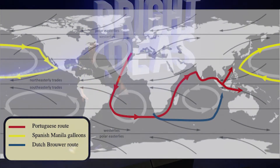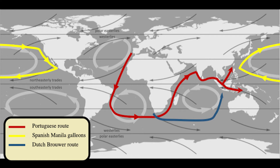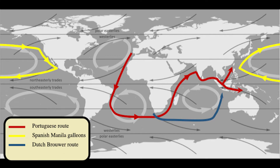The Dutch found a shortcut across the Indian Ocean, cutting out the Portuguese, and discovered the continent of Australia in the process. They came to dominate the spice trade by using a band of winds in the Southern Oceans known as the Roaring Forties — effectively a motorway in the ocean.